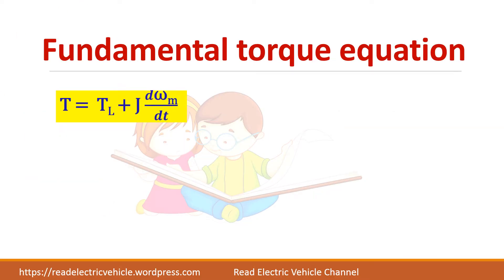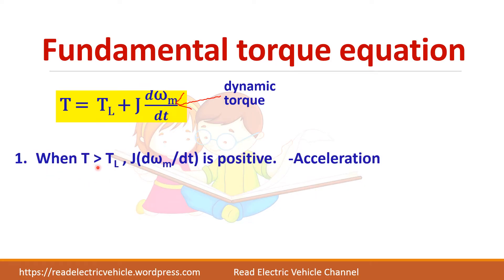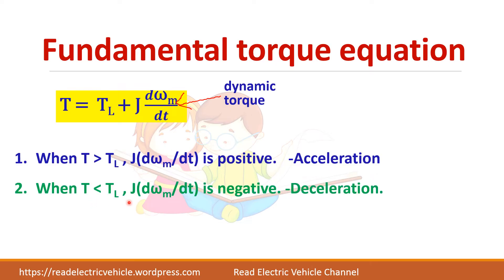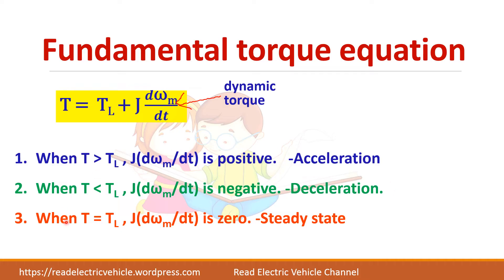The fundamental torque equation derived in previous videos is: motor torque equals load torque plus J times D-omega-m by DT, where J is the moment of inertia and the last term is the dynamic torque. When motor torque is greater than load torque, acceleration occurs. When load torque is greater, deceleration occurs. At steady state, motor torque equals load torque, making the dynamic torque term zero.